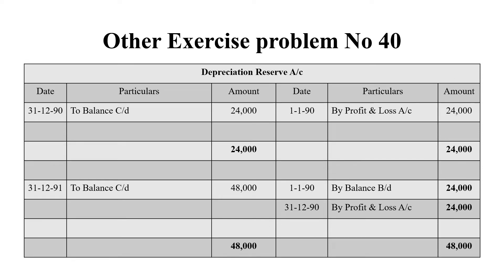Next, we open the Depreciation Reserve Account. On 1/1/1990, we pay 24,000 to the insurance company — this is an expense. On the debit side, we record Profit and Loss Account in the Depreciation Reserve Account. We credit by Profit and Loss Account — that is 24,000. The balance carried down is 24,000.